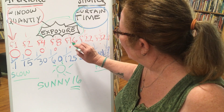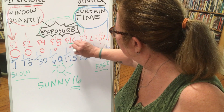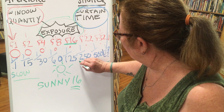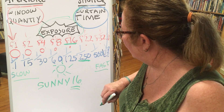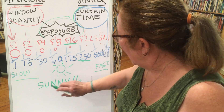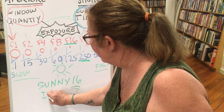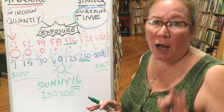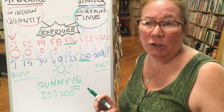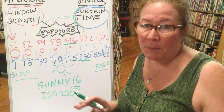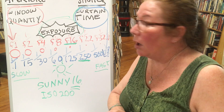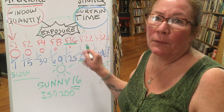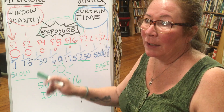In full sun, you set your aperture at f16 and your shutter speed at one two-fiftieth of a second — that's 1/250. You also always set your ISO at 200. Whatever camera you have, make sure your ISO is set to 200, not on automatic or any other setting — keep it at ISO 200 at all times during this class.